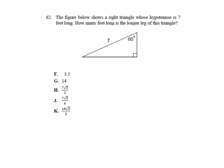The second example says the figure below shows a right triangle whose hypotenuse is 7 feet long. How many feet is the longer leg of the triangle? The longer leg is right here. Same thing, we're going to label. This side is opposite my angle. 7 is across from the hypotenuse. I have opposite and hypotenuse, so I should use sine.